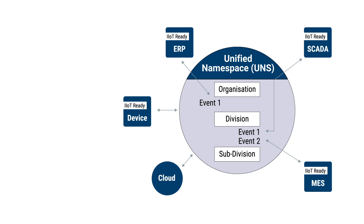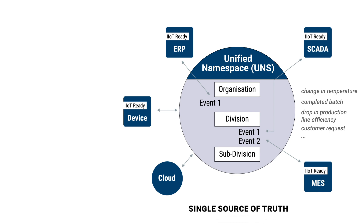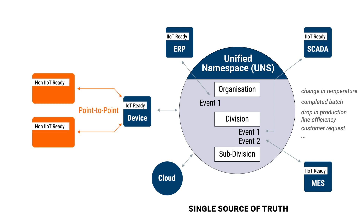Events may, for example, represent a change in temperature, a completed batch, a drop in production line efficiency, or a customer request under a specific level of your hierarchy. This naming arrangement provides a single source of truth containing all the data about the structure and current state of your entire enterprise. In a nutshell, this is what the unified namespace is all about. All components that can communicate using IIoT protocols, such as MQTT, point to a central repository of information that holds your hierarchical enterprise structure and publish their events under a category in which it makes sense for that data to live. Components that are not IIoT-ready are placed behind an IIoT gateway that publishes information to the relevant categories on their behalf.